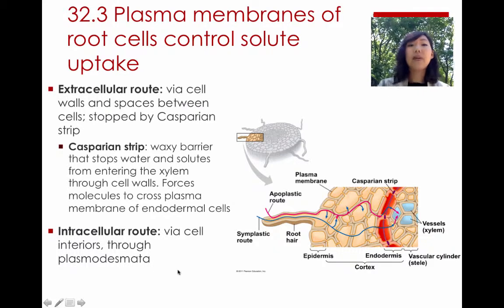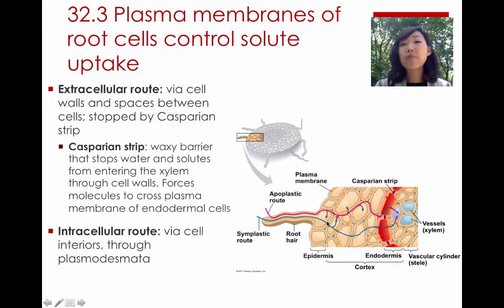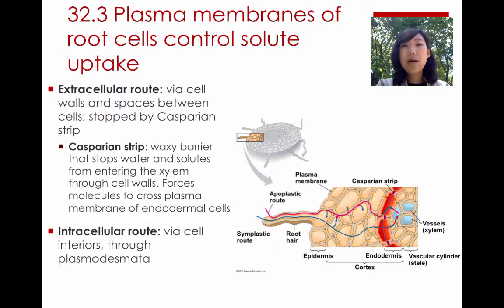The other possibility is the intracellular route, where materials travel via the interiors of the cells from the very beginning. All materials have to pass through the different selectively permeable membranes. To travel from cell to cell, there are plasmodesmata — those little holes that allow solutes and materials to be transferred between cells.